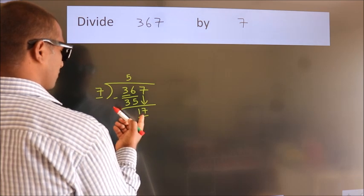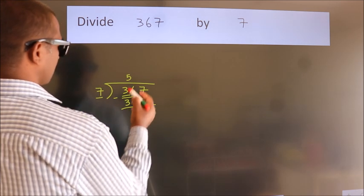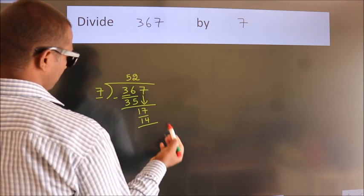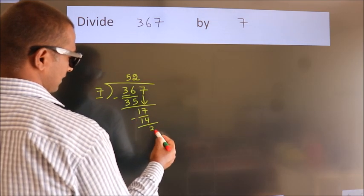A number close to 17 in the 7 table is 7 twos, 14. Now we subtract and get 3.